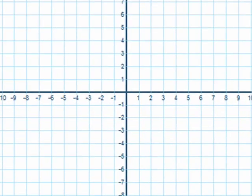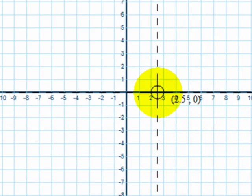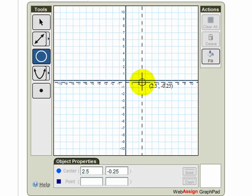So I'm going to start by plotting the center at 5 halves, which is 2 and a half, comma, negative 1 fourth. And in this case, you can see from the fine detail at the bottom that I can find this point exactly. Remember, you can change this point later if you can't get it exactly on the graph.